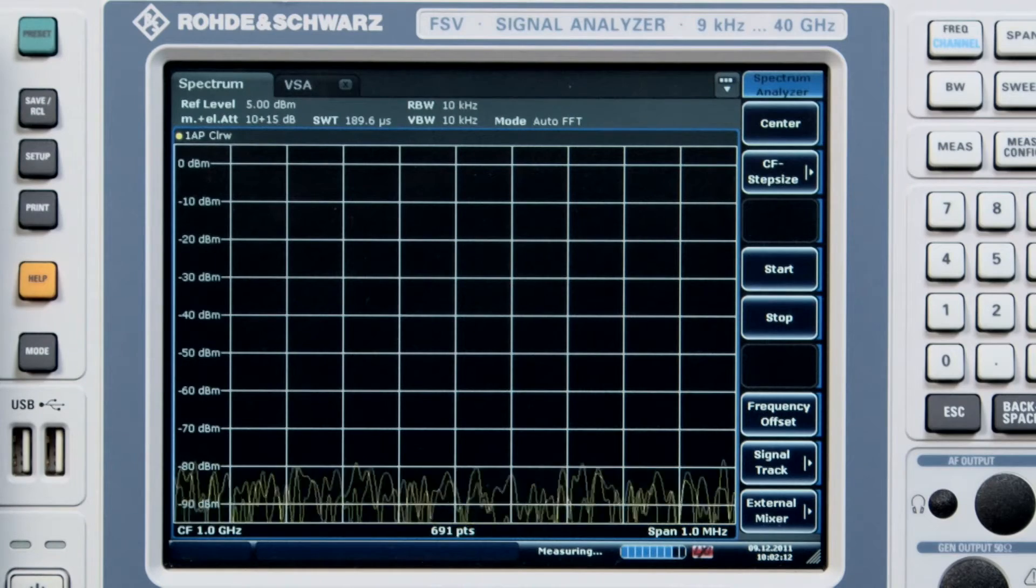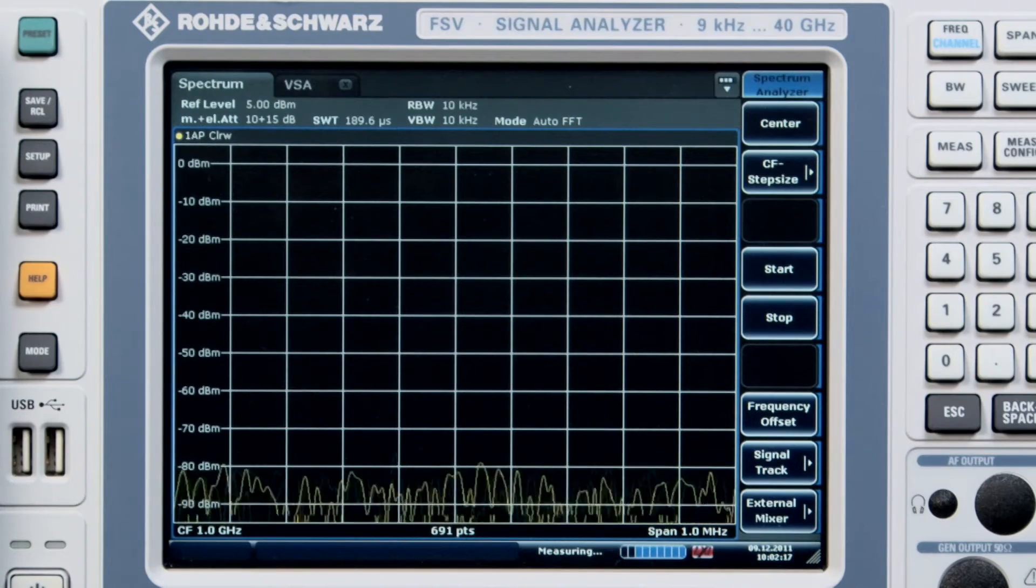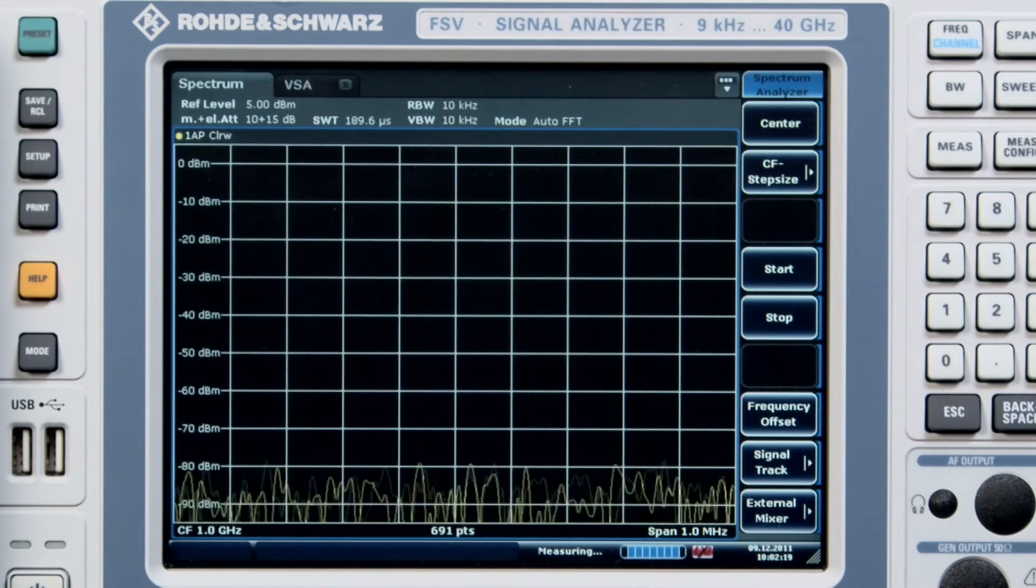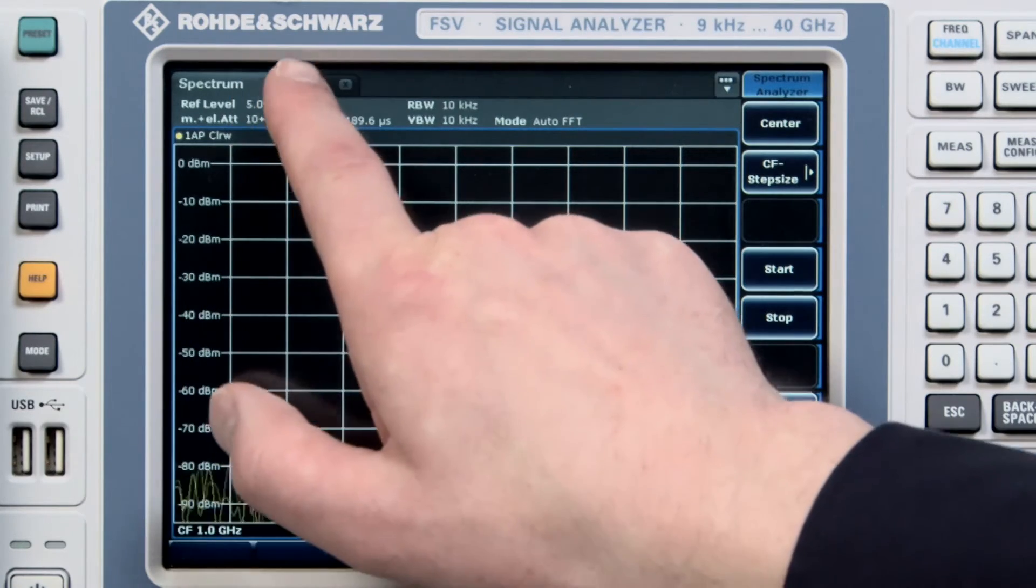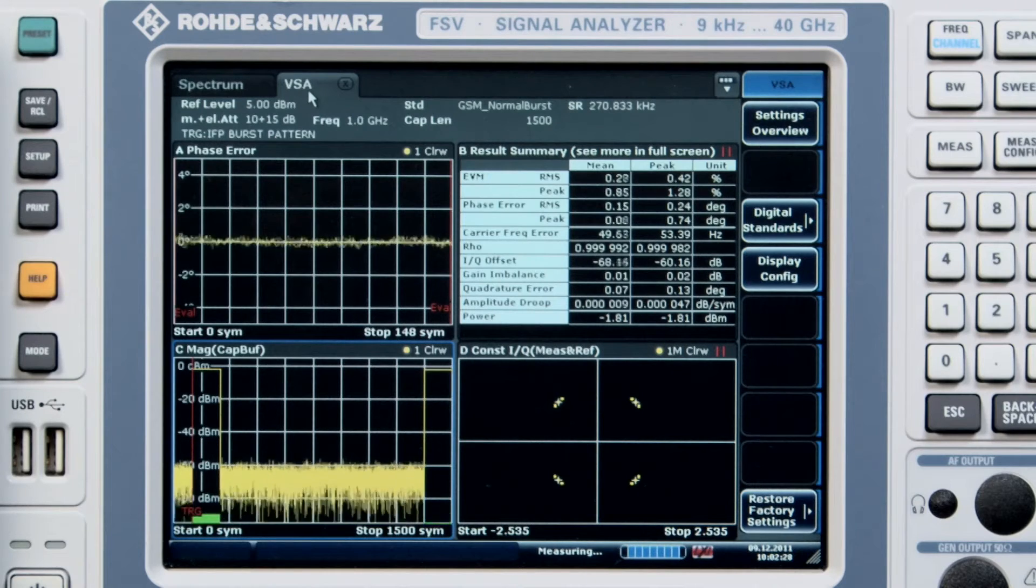On the screen here we have a GSM signal that's bursting, and we can switch quickly into the vector signal analyzer software to get a demodulation of that signal. We can see the constellation diagram and some results including an EVM of about 0.29%.